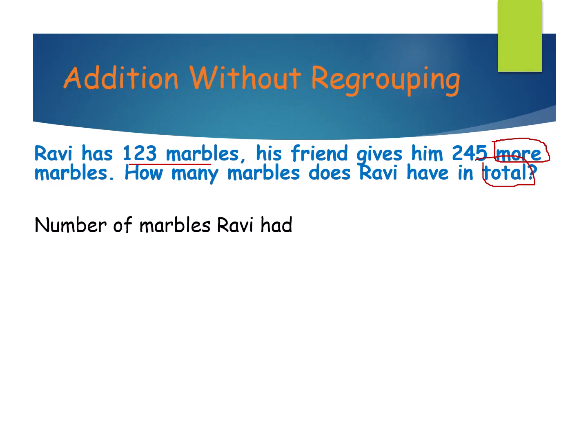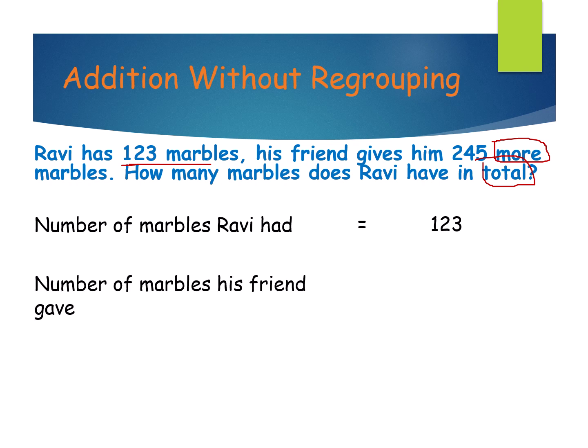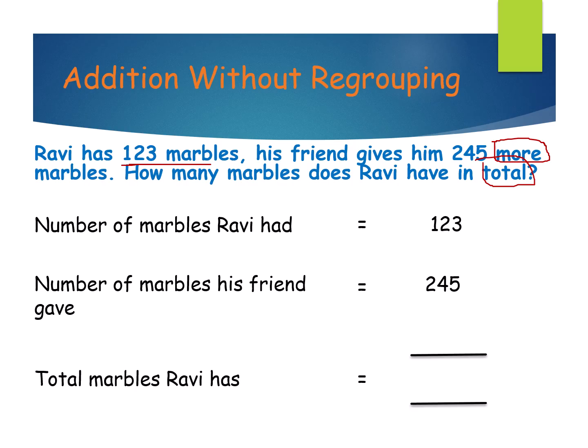First one: number of marbles Ravi had — how many? 123. Next, his friend gives him 245 more. Number of marbles his friend gave — how many? 245. What are they asking? How many marbles does Ravi have in total? Total marbles Ravi has.